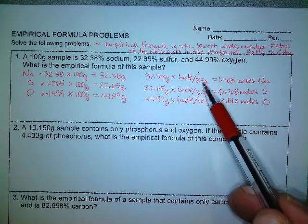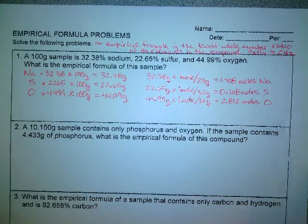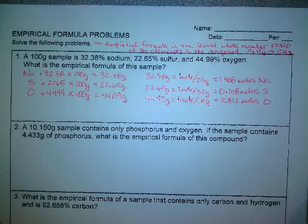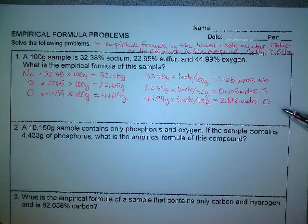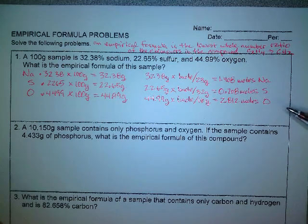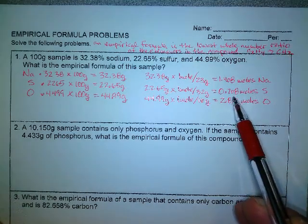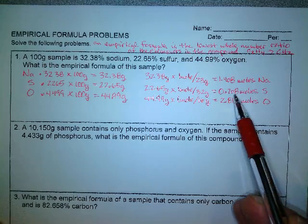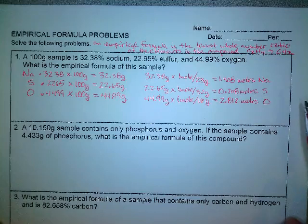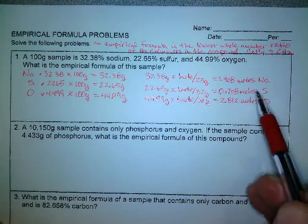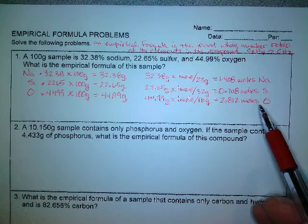The next step is to do mole ratios between the different elements. Since I have three elements here, I'm going to do two ratios. And the key is, I'm going to pick the smallest one and do the other two in comparison to that. So I'm going to do sodium over sulfur and then oxygen over sulfur for my two comparisons. And I always make the smallest one the denominator for both.